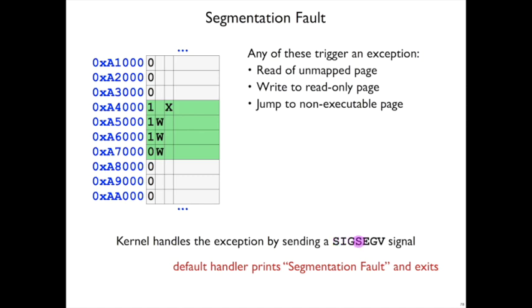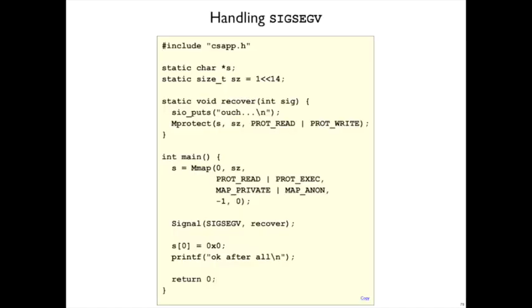The signal is SIGSEGV and the default handler of SIGSEGV prints segmentation fault and exits, but we can change that behavior if we want to. And one way that's useful to change that behavior is to have that signal handler change the protection on the page, if for some reason it's suitable.